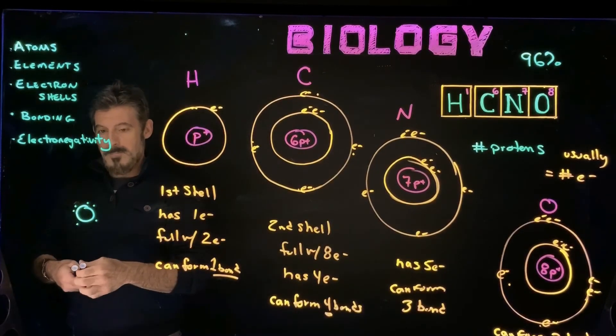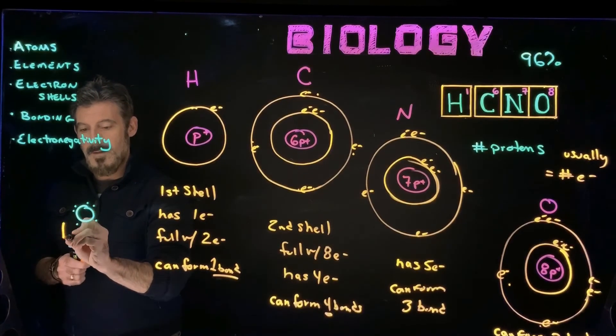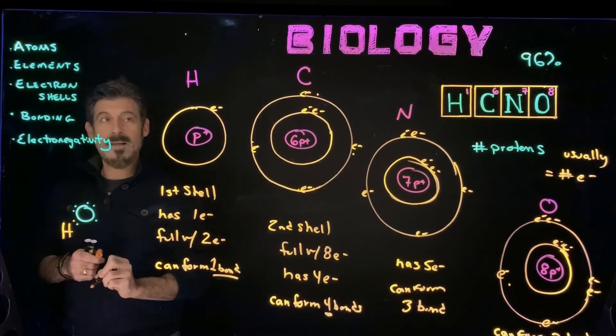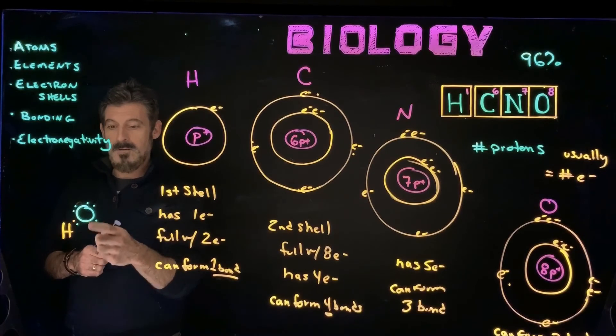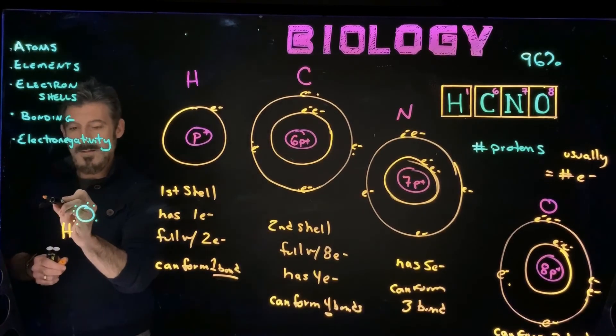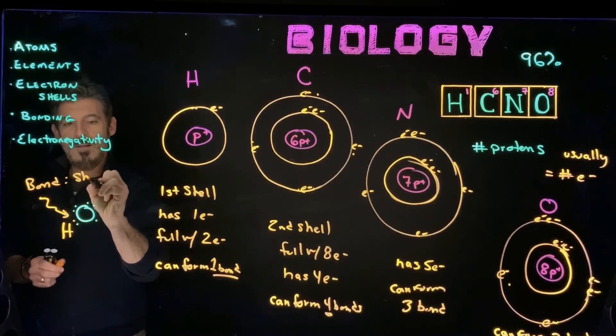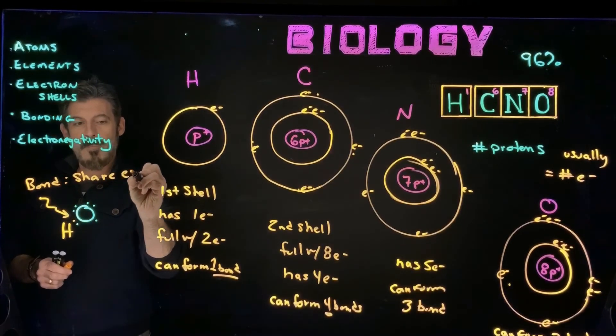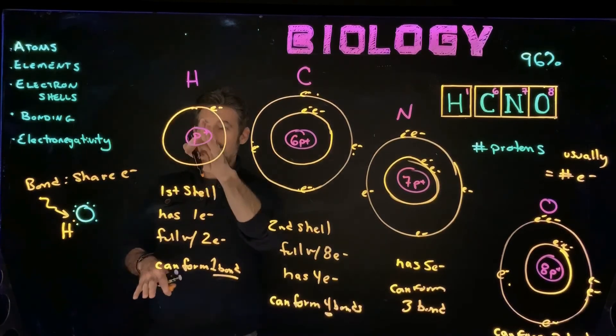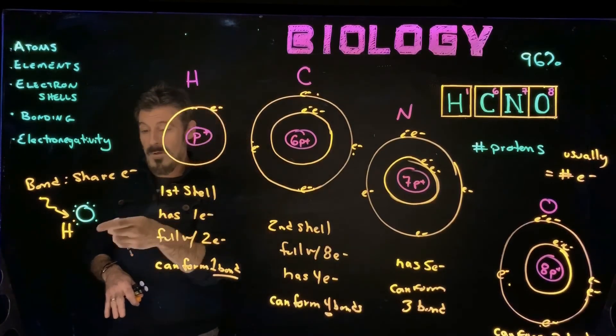A hydrogen has one electron in its outer shell, so they can form a bond here where they share electrons. Now for that hydrogen, it's full, it's done, it only needed one, it has one, it's over with.